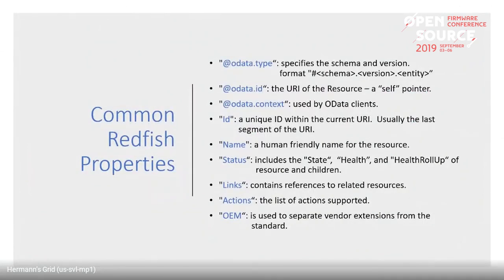Common Redfish properties: all resources have the schema and version in the odata.type. odata.id is the URI of the resource. ID is a unique ID. Name is a human-friendly name. Status has three properties: state — which can be one of 10 different states like disabled, enabled, or updating — health, which can be three different values: OK, critical, or warning, and health rollup, which represents the health of the resource and all its children.